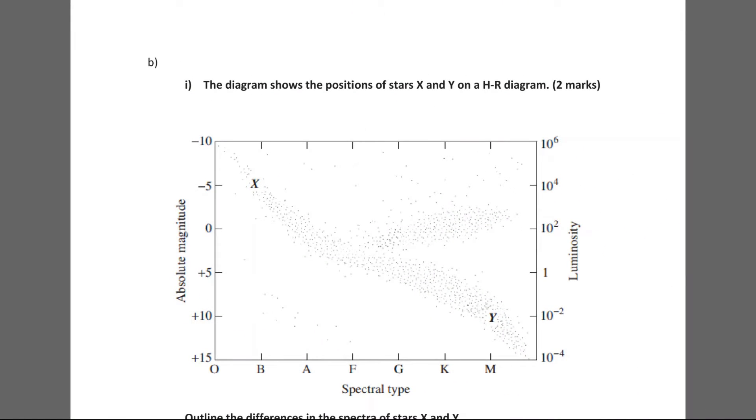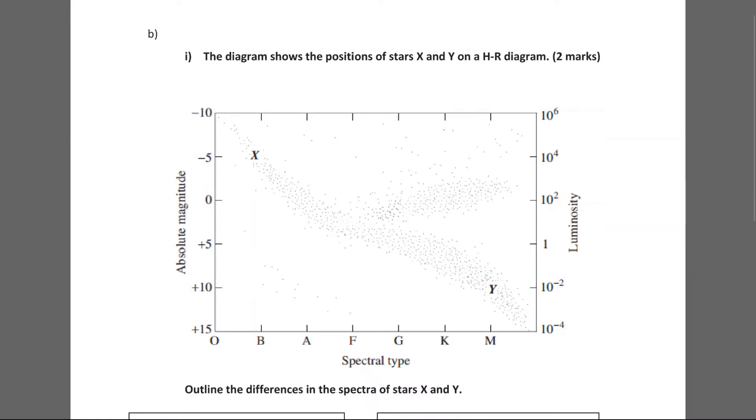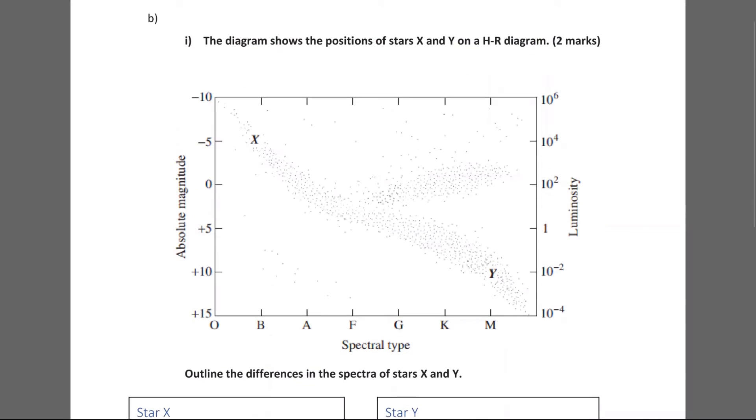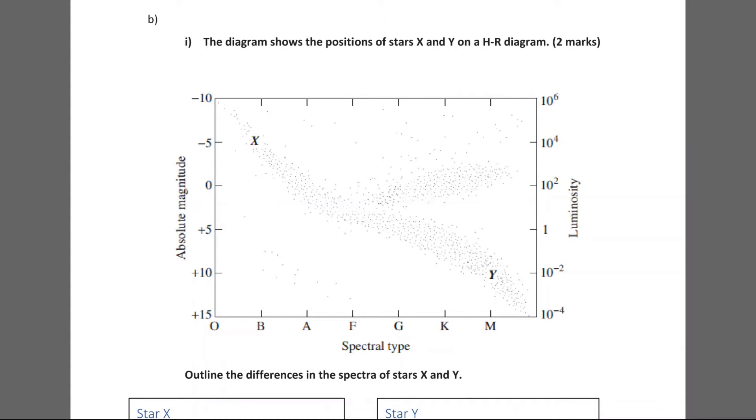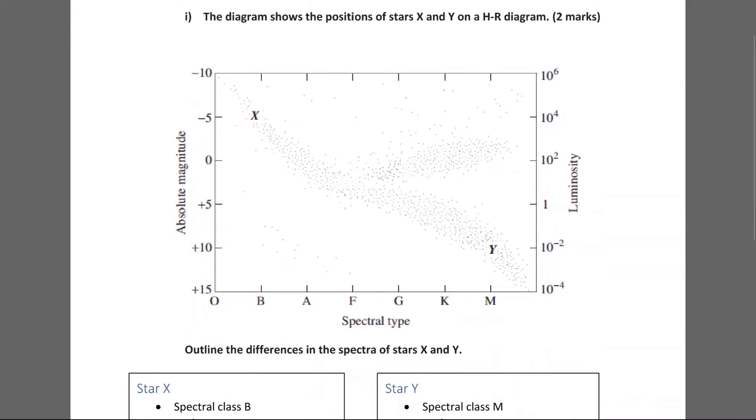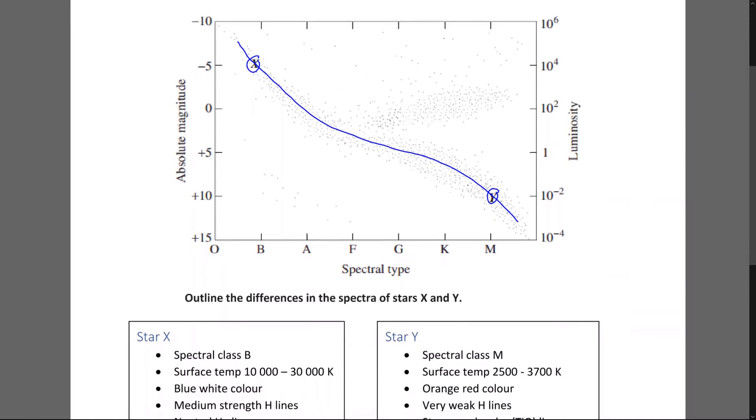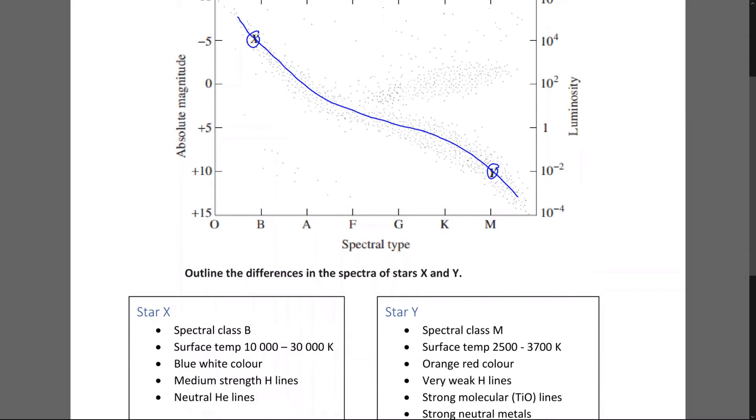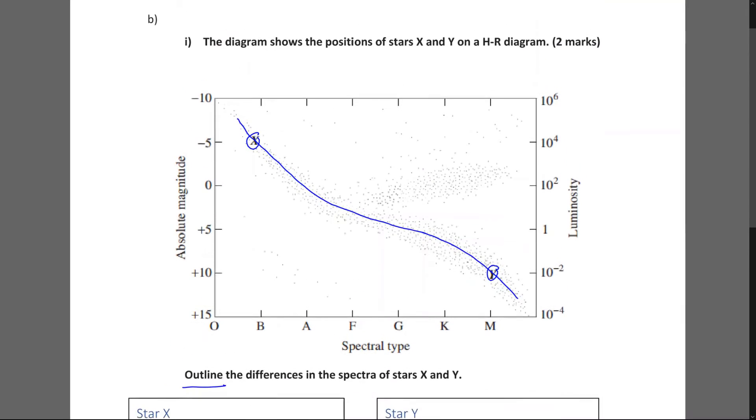Part B, part one says the diagram shows the positions of stars X and Y on the HR diagram. So HR diagram is a Hertzsprung-Russell diagram. They're the guys who developed this diagram where we place all the stars based on their spectral type, their luminosity, and their absolute magnitude. Now we've got two stars, X and Y. And we can see that they are along the main sequence line, which is this line that goes along here. Now, outline the differences in the spectra of stars X and Y.